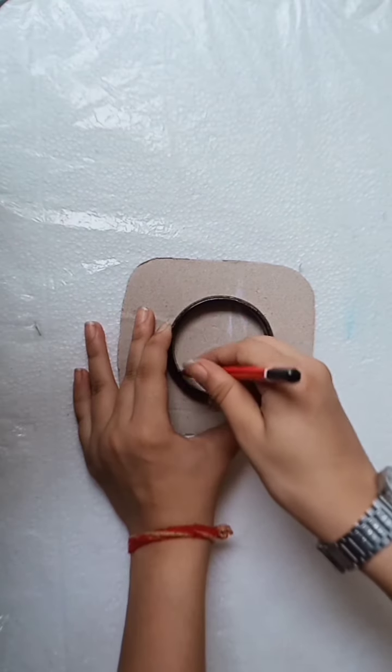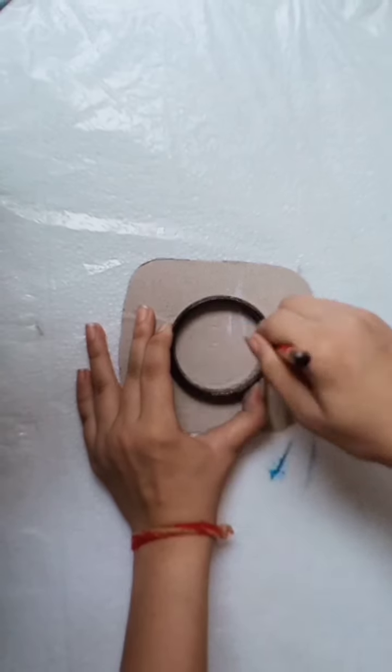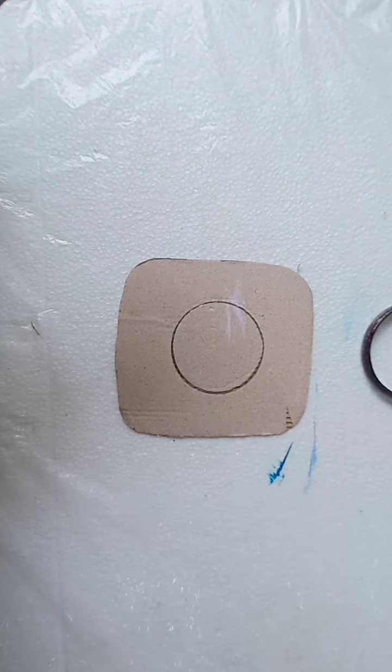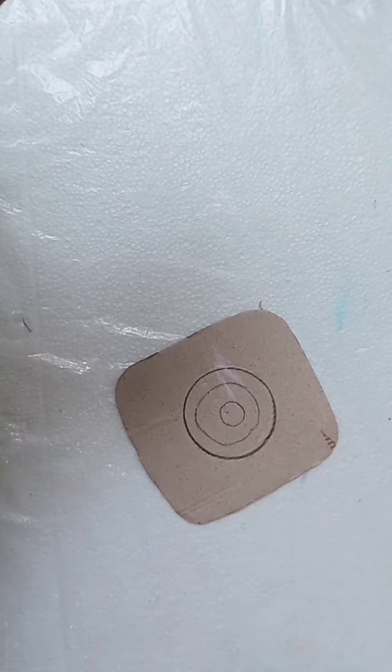Hey guys, welcome back to my channel. Today I'm going to make a new wall hanging. First, we have cardboard. We'll draw circles on it, and after drawing the circles we'll outline them.